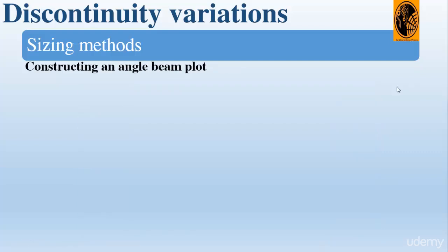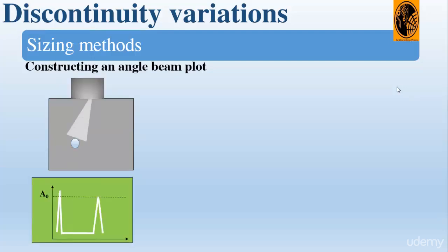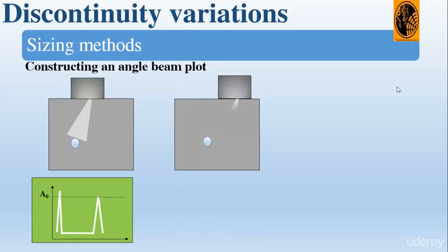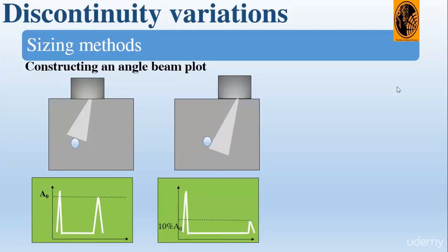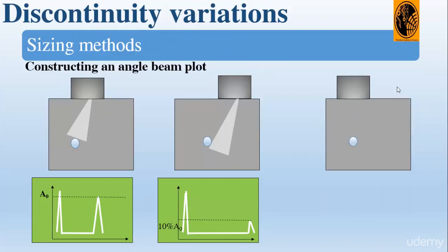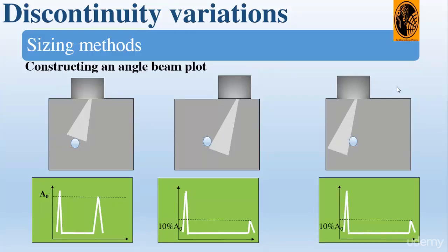For the construction of an angle beam plot, we follow the same steps. First, find the hole and get the maximum signal, then set it to full screen height using the gain function. Move the probe to one side of the block until we get 10% of the original amplitude, then do the same from the other side. We can use different depths as we did for the zero degree probe, and then use the same graph paper to construct the angle beam plot.